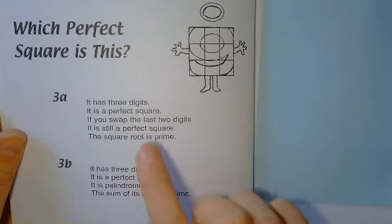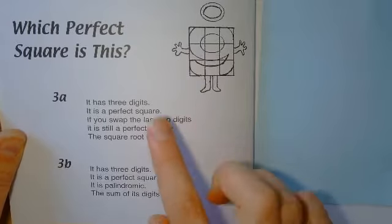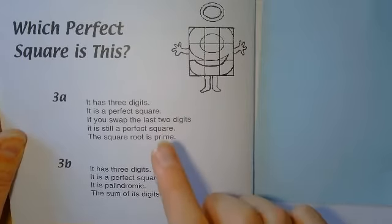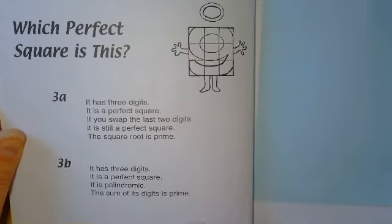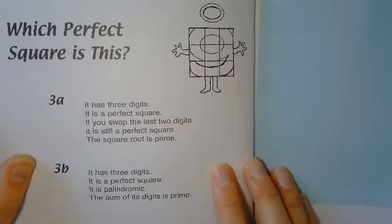So let's just recap this first part. We're looking for a three-digit square number that's still a square number when you swap the last two digits, and its square root is a prime number. So that's the first part.